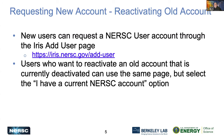A little more about user accounts. To request a user account, you go through our IRIS website at iris.nersc.gov/add-user, where we collect information about your contact information, your organization, the project you want to join, and other information that DOE requires. Also, if you previously had a NERSC account and it has been deactivated — either because you haven't used it in a long time or were removed from all your projects at end of year — you can get it reactivated using the option on the add-user page, where you can enter your username and the project you want to join.